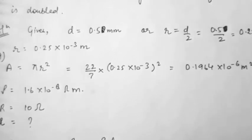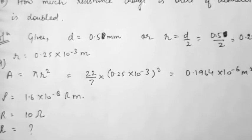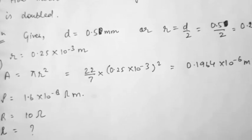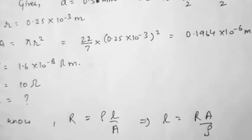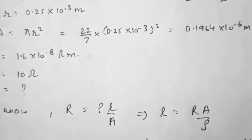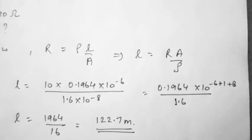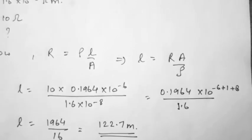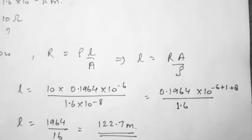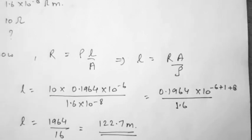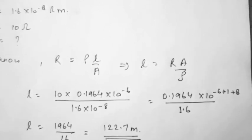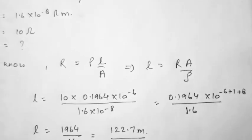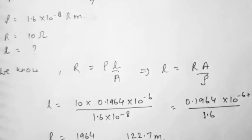Resistivity ρ = 1.6 × 10⁻⁸ ohm meter and R = 10 ohm. Let the length be L. From R = ρL/A, we get L = RA/ρ. Substituting: L = (10 × 0.1964 × 10⁻⁶) / (1.6 × 10⁻⁸). Combining the powers of 10 gives 10³, moving the decimal 3 places right. So L = 1964/16 = 122.7 meters.